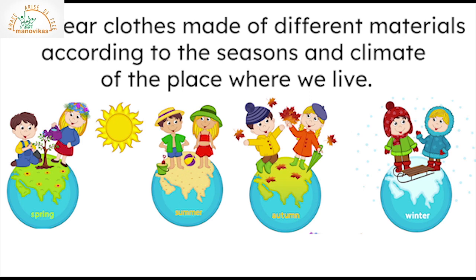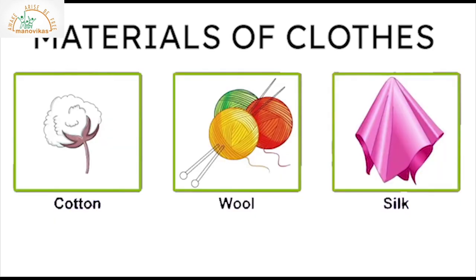We wear clothes made of different materials according to the seasons and climate of the place where we live. The main materials are cotton, wool and silk.